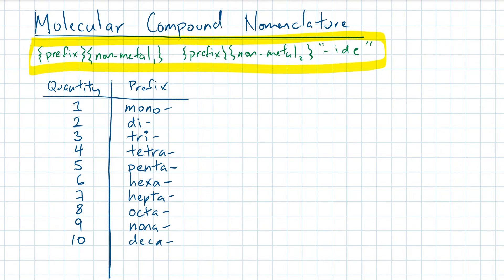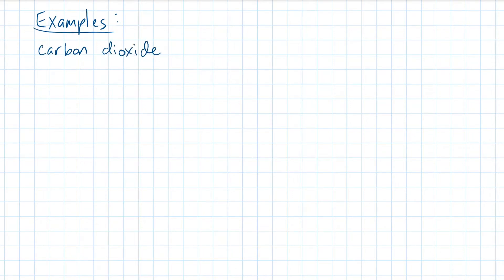There is one exception. If the first nonmetal already has a quantity of one, you do not need to prefix it with mono. Let's go through some examples. There are two different types of carbon oxides. Remember, carbon and oxygen are both nonmetals. If the molecule consists of just one carbon and two oxygens, you have the formation of carbon dioxide.